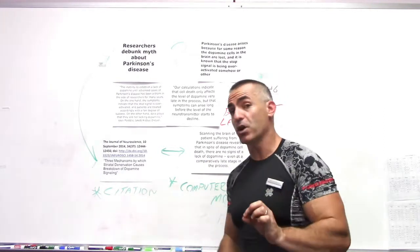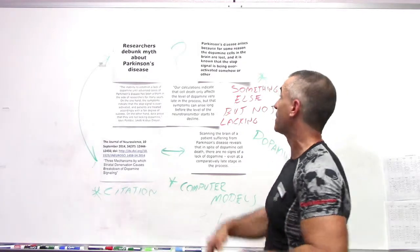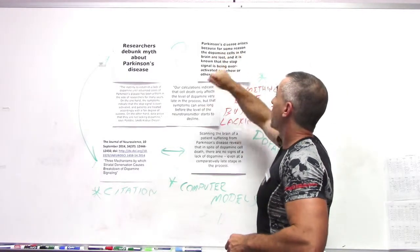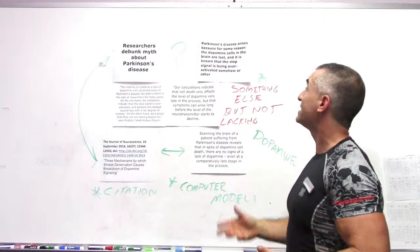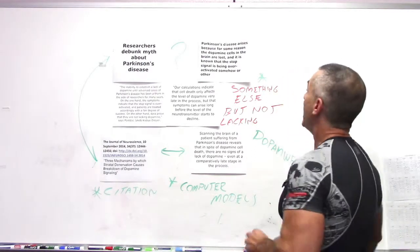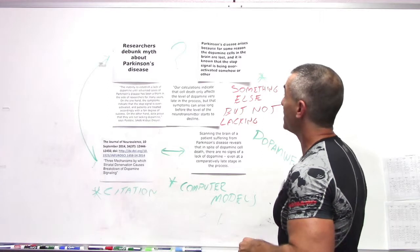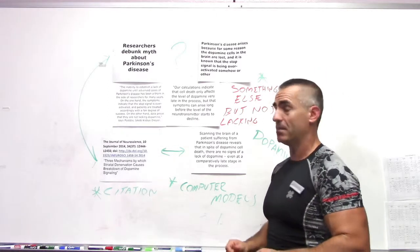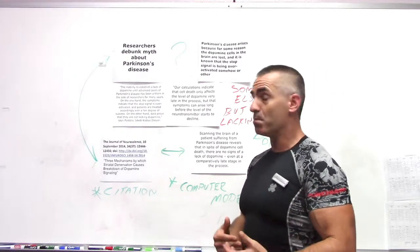Now here we go, getting to the point. The researchers did point out that Parkinson's disease arises because dopamine cells in the brain are lost, and it's known that the stop signaling is being overactivated somehow, kind of like the brakes in the body, basically shutting down the dopamine system.